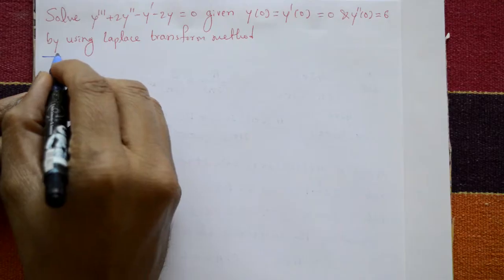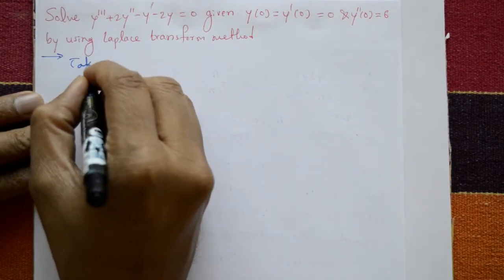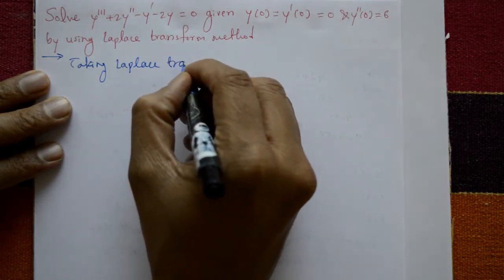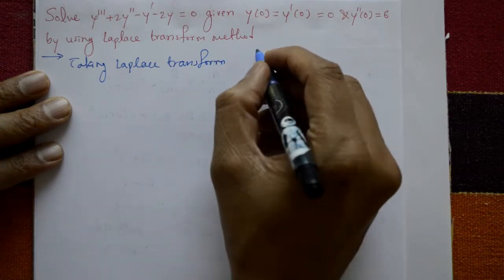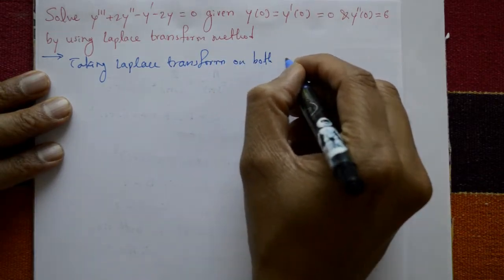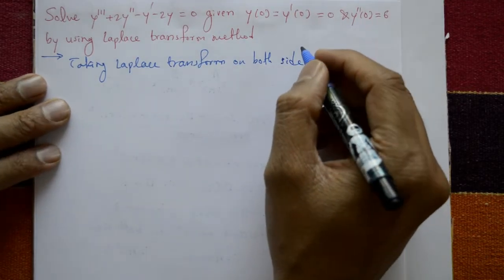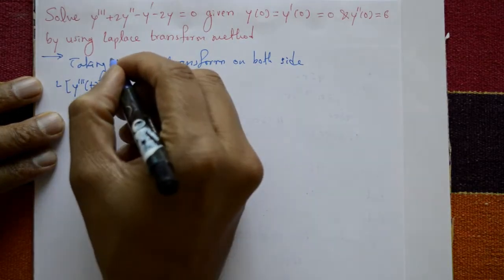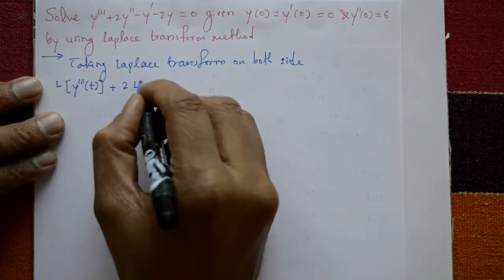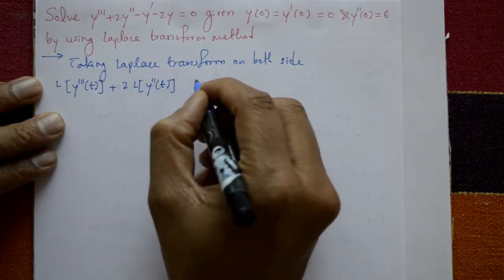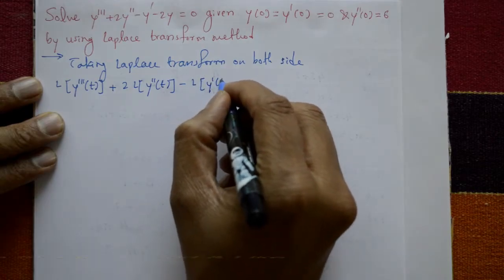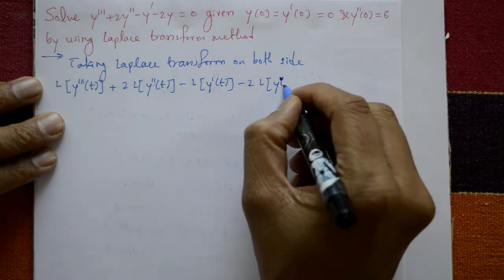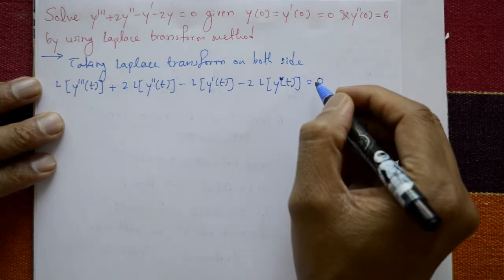Taking Laplace transform on both sides: L{y'''(t)} + 2·L{y''(t)} - L{y'(t)} - 2·L{y(t)} = 0.